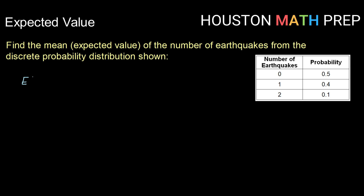If we were to find the expected value of the number of earthquakes, we would take each possible outcome — 0, 1, and 2 — and multiply it by its associated probability. That would be 0 times 0.5, plus 1 times its probability, 0.4, plus 2 times its probability, 0.1.